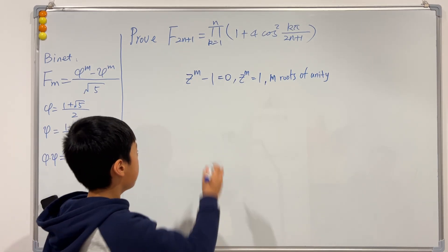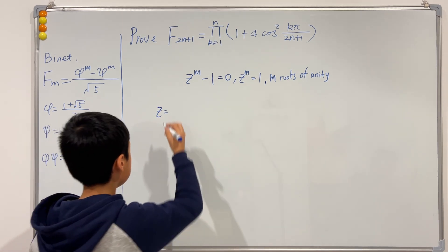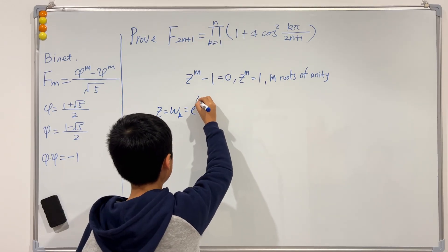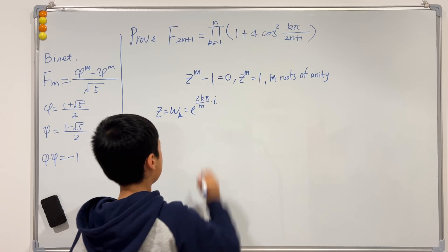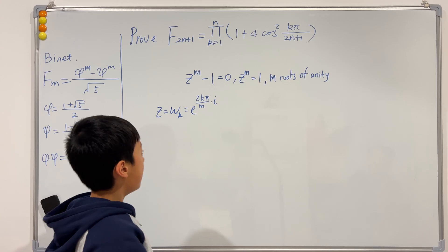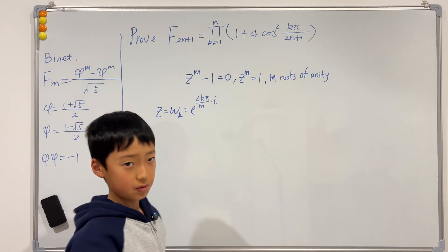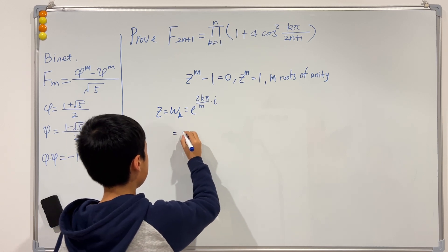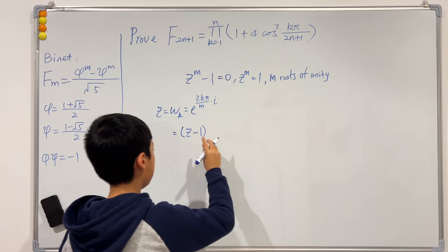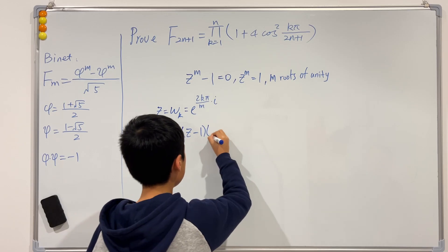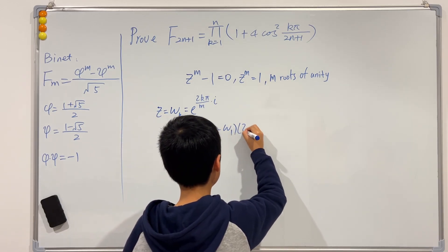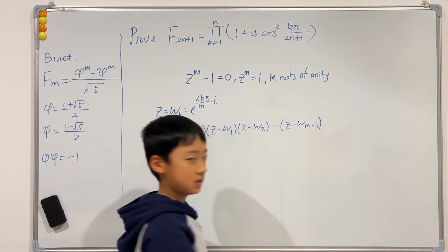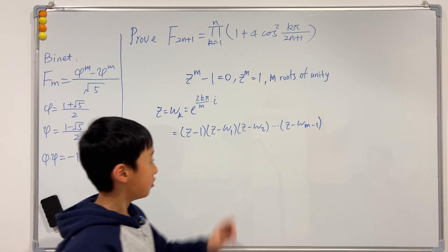Because of this, we know that z equals omega, written in exponential form as e^(2kπi/m). Since this is a polynomial and z is the variable, we can factorize it like any other polynomial: (z − ω₀)(z − ω₁)(z − ω₂) all the way to (z − ω_{m−1}), because since we started at ω₀ we have to end at ω_{m−1}.